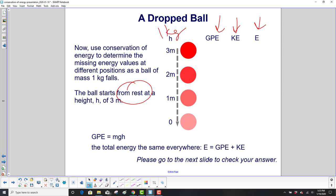Use GPE equals mgh. We will assume that the total energy is the same everywhere. There are no external forces acting. We're ignoring air friction here.